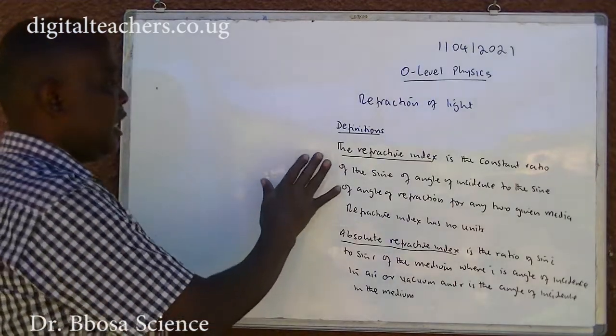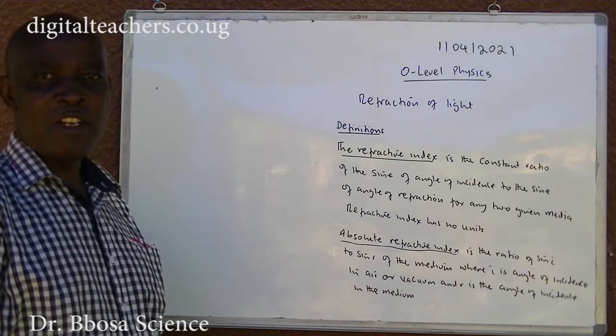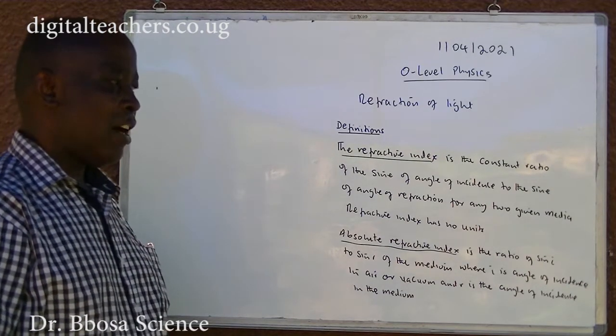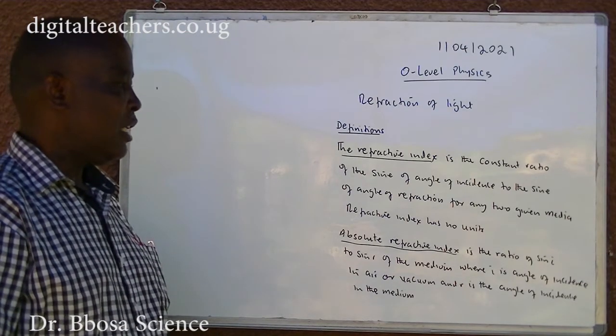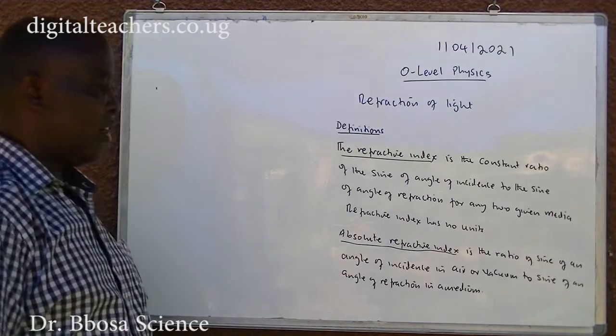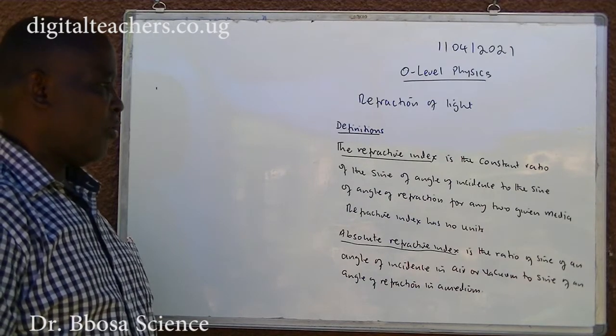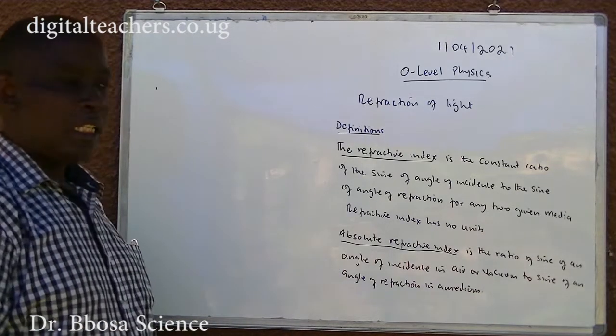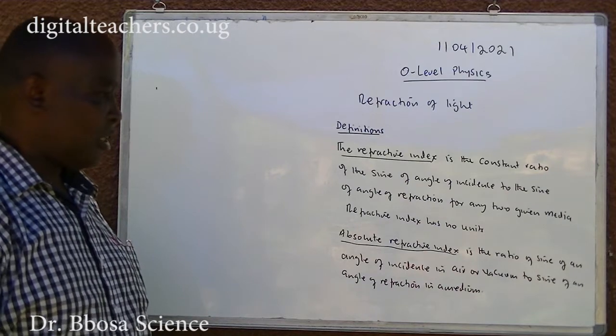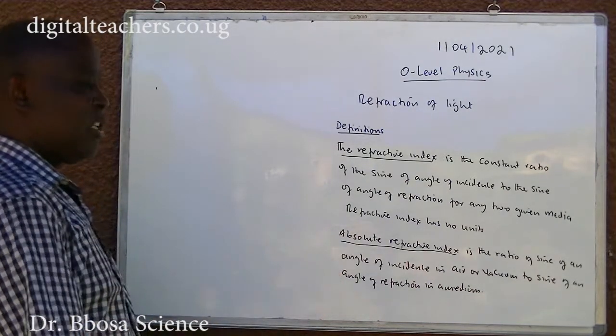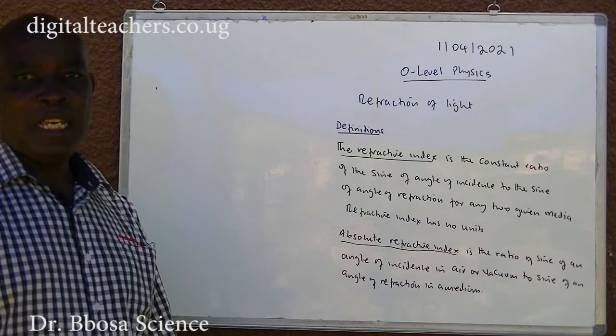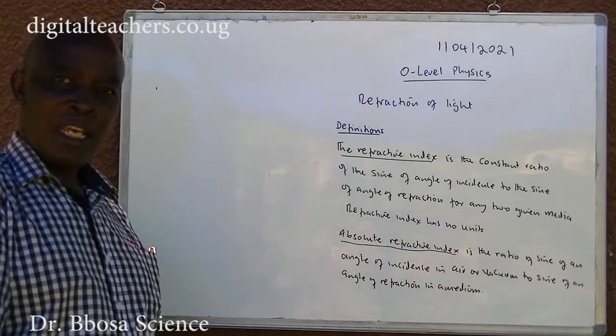Definition: the refractive index is the constant ratio of the sine of an angle of incidence to the sine of an angle of refraction for any two given media. The refractive index has no units. Absolute refractive index is the ratio of the sine of any angle of incidence in the air or vacuum to the sine of any angle of refraction in a medium. When you are looking at absolute refractive index, one of the media is a vacuum or air and light must be passing through.